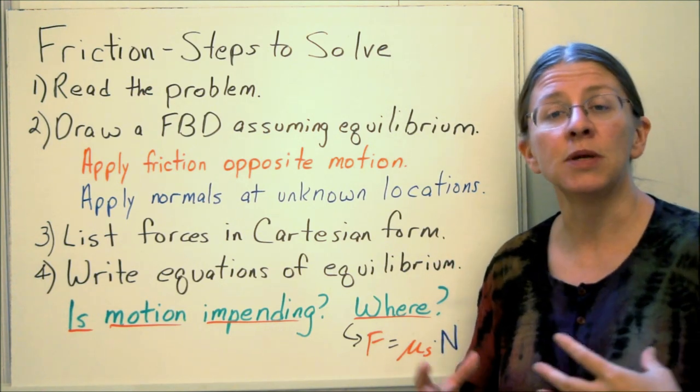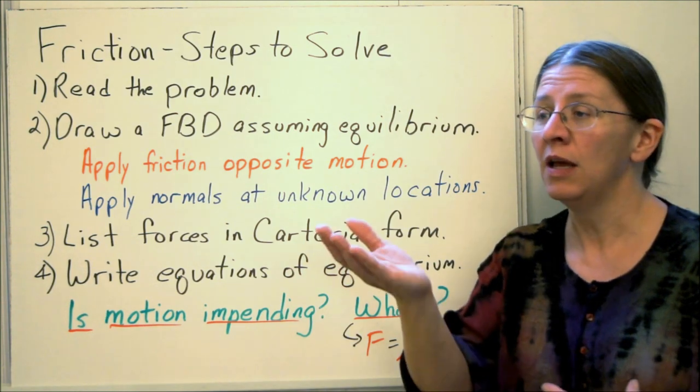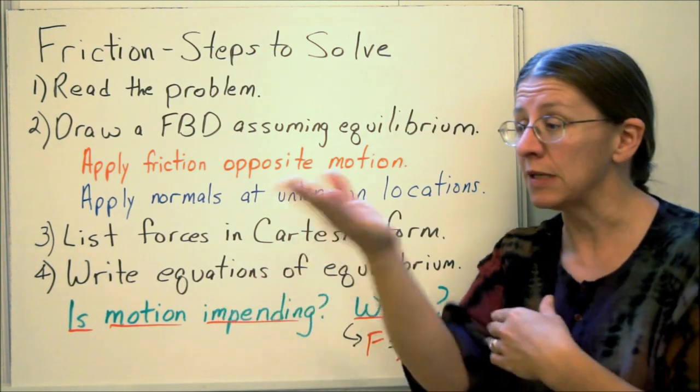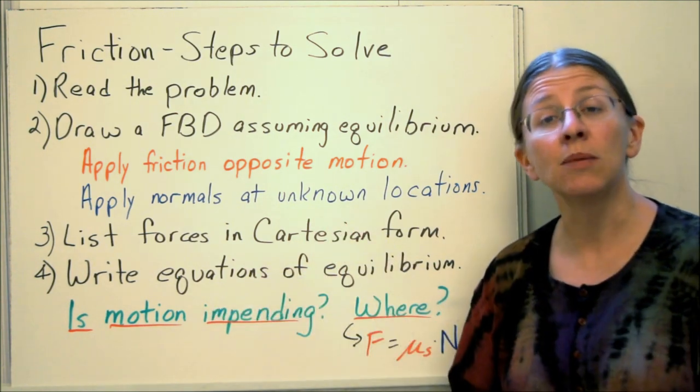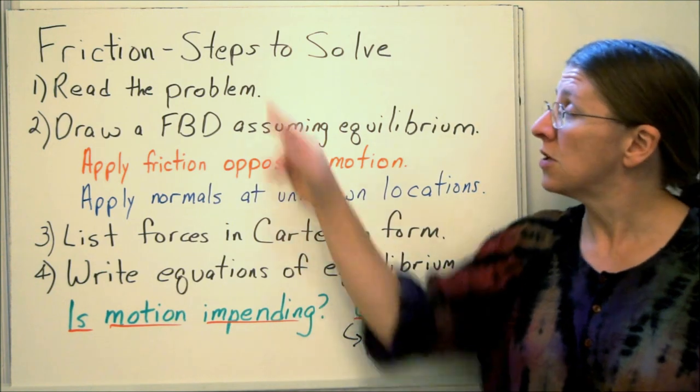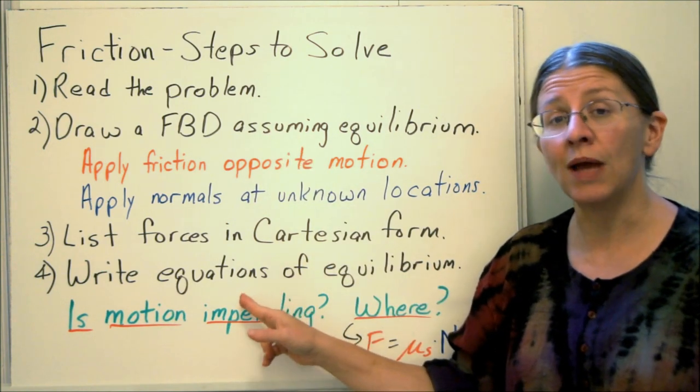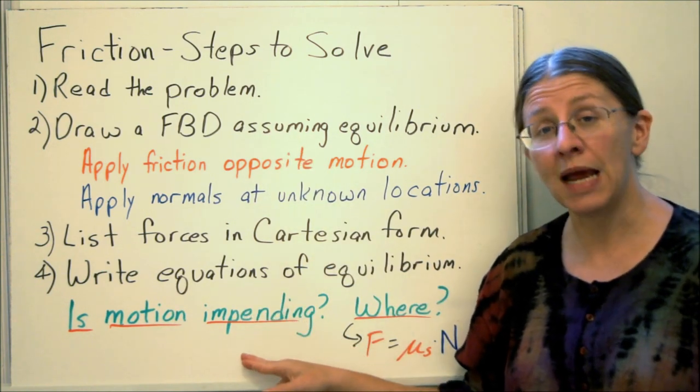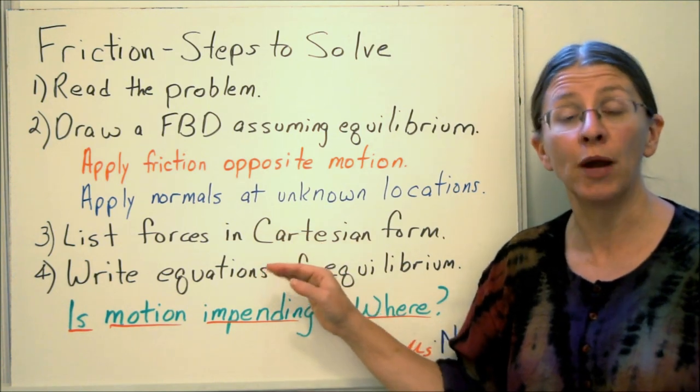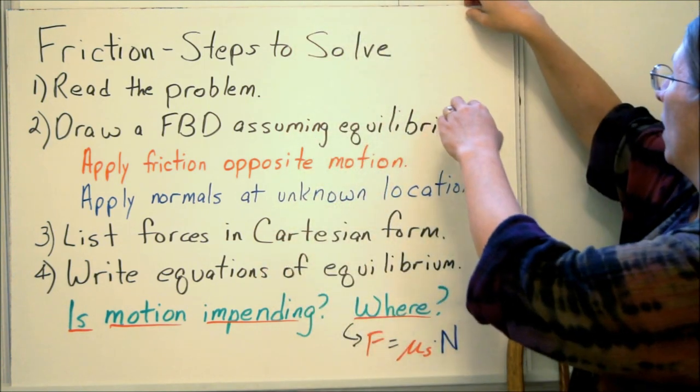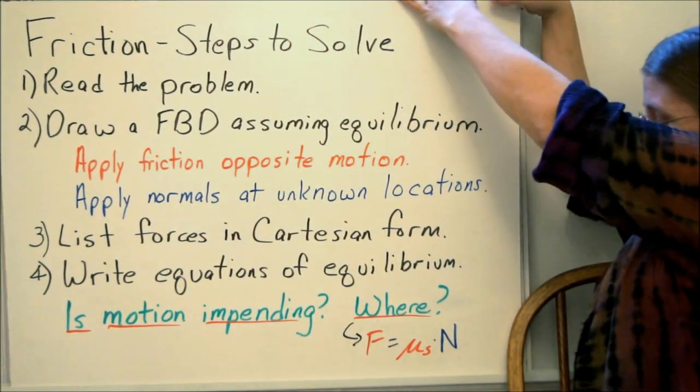And what we end up with is a bunch of different cases. So you might have it slips here but not here, or it slips here and here. And you need to be able to consider all of your options. So these steps will let you get to this without having assumed anything at this point. Your equations with equilibrium will be good no matter what happens.